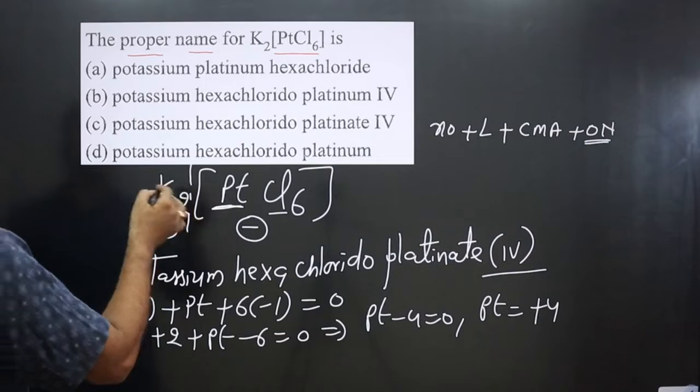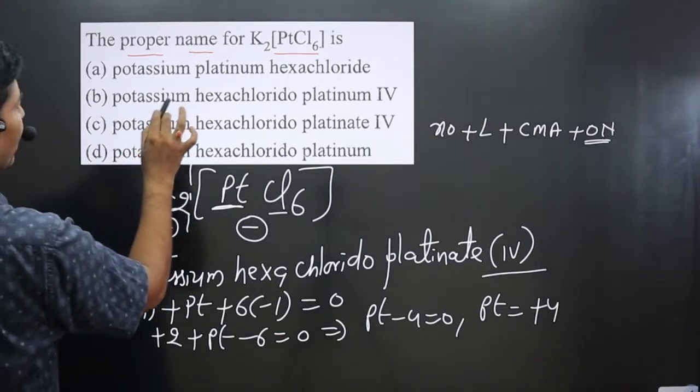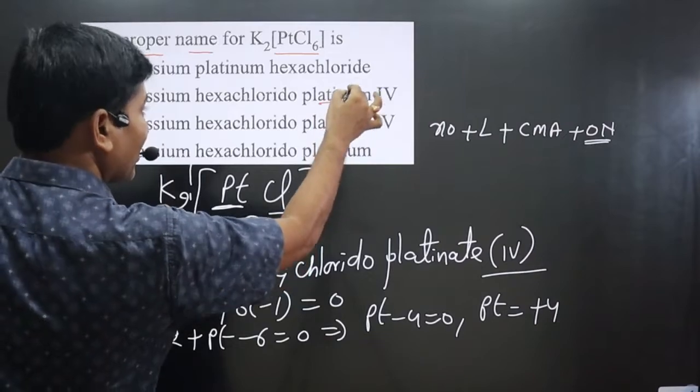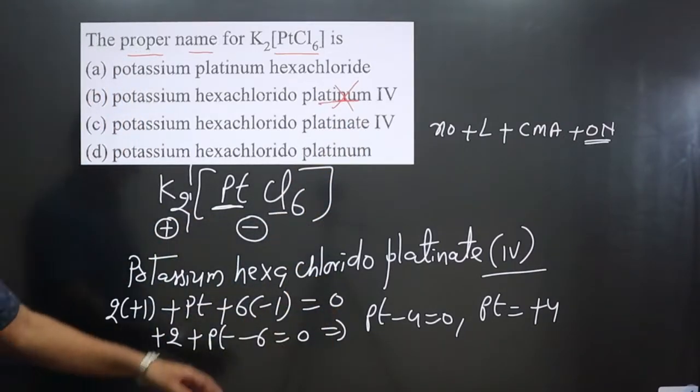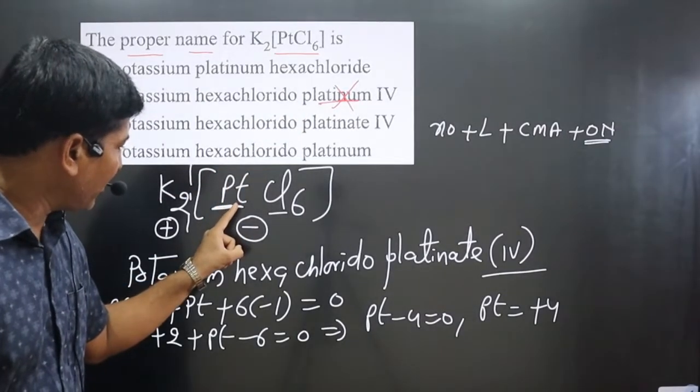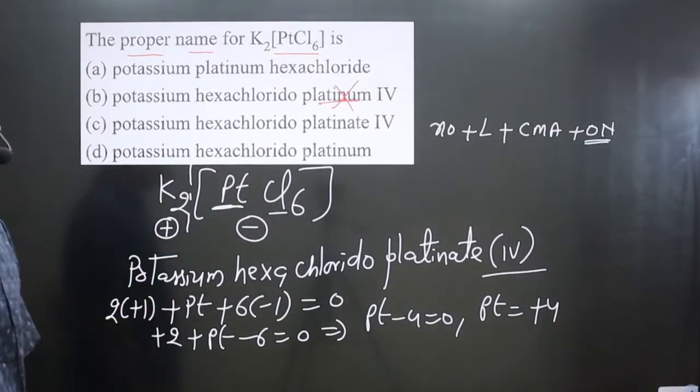So we can match. First one is potassium hexachlorido platinum - no, platinum. You can see, for the confusing they have given this. We use platinum only when the central element is present in the cationic part. We use the common name.